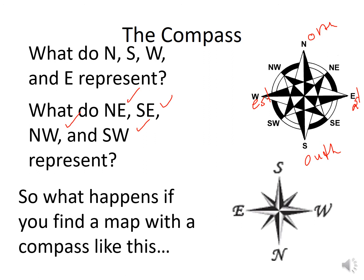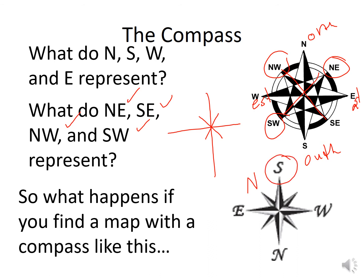What would happen if you found a compass that looked like this — missing some markings? Well, a compass is always oriented the same way, so it's never really missing its core directions. If South is at the top, we just flip it. For example, this one becomes Southeast because it's on the east side. And this one is Southwest. All we did was flip it — so we all have to look at things very carefully.